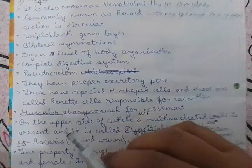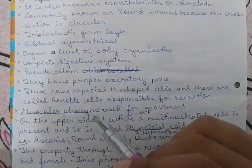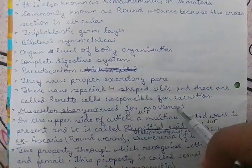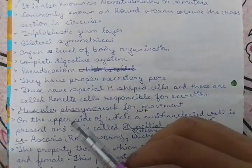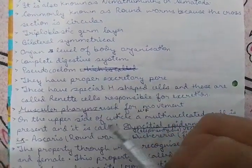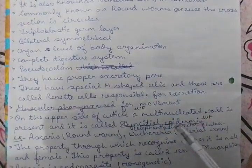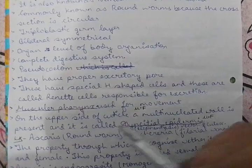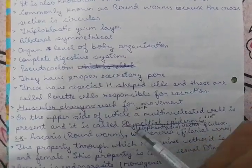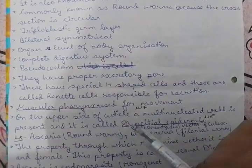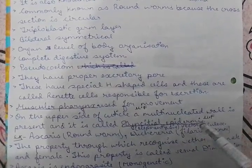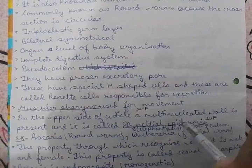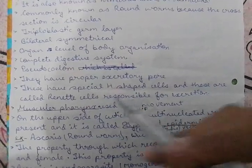They have a muscular pharynx which helps in movement. On the outer side of the body wall there is a cuticle, and a unique feature is the syncytial epidermis present on the body wall.